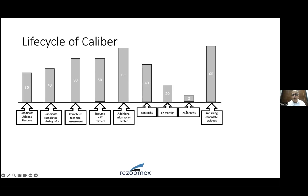A professional can always return and update their information to restore their caliber. Notably, only minimal identity information is stored on-chain since what is on-chain is immutable. Everything else — the reasons for caliber tokens, age, education, experience, certifications — is stored off-chain, which allows it to increase or decrease caliber over time.